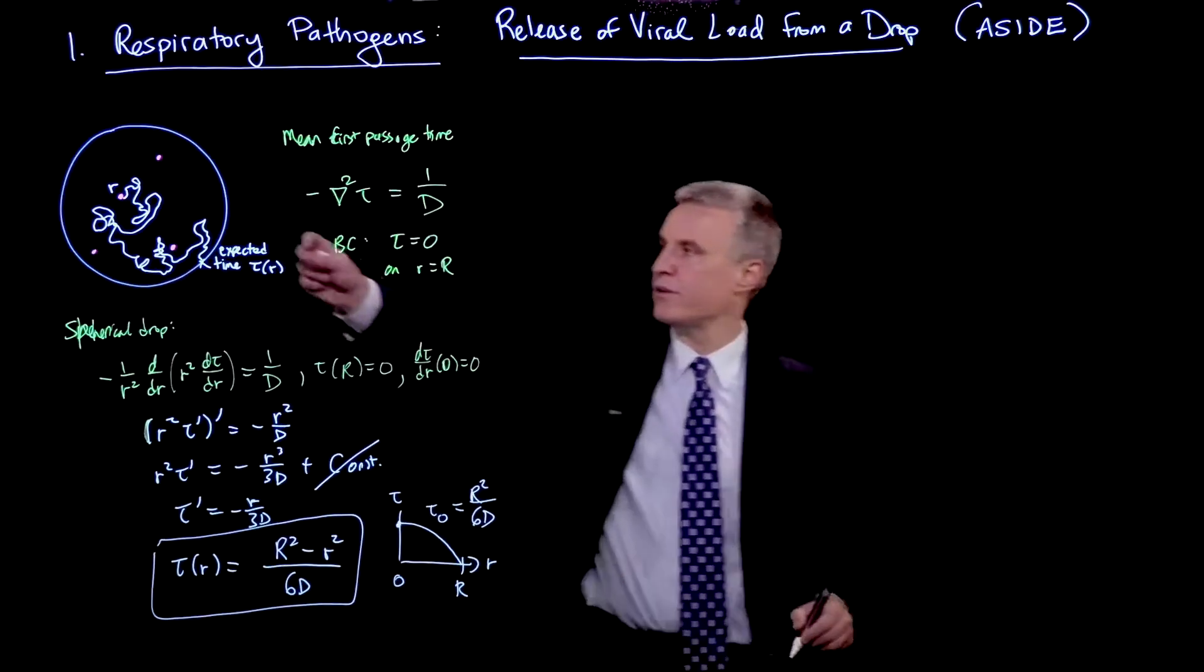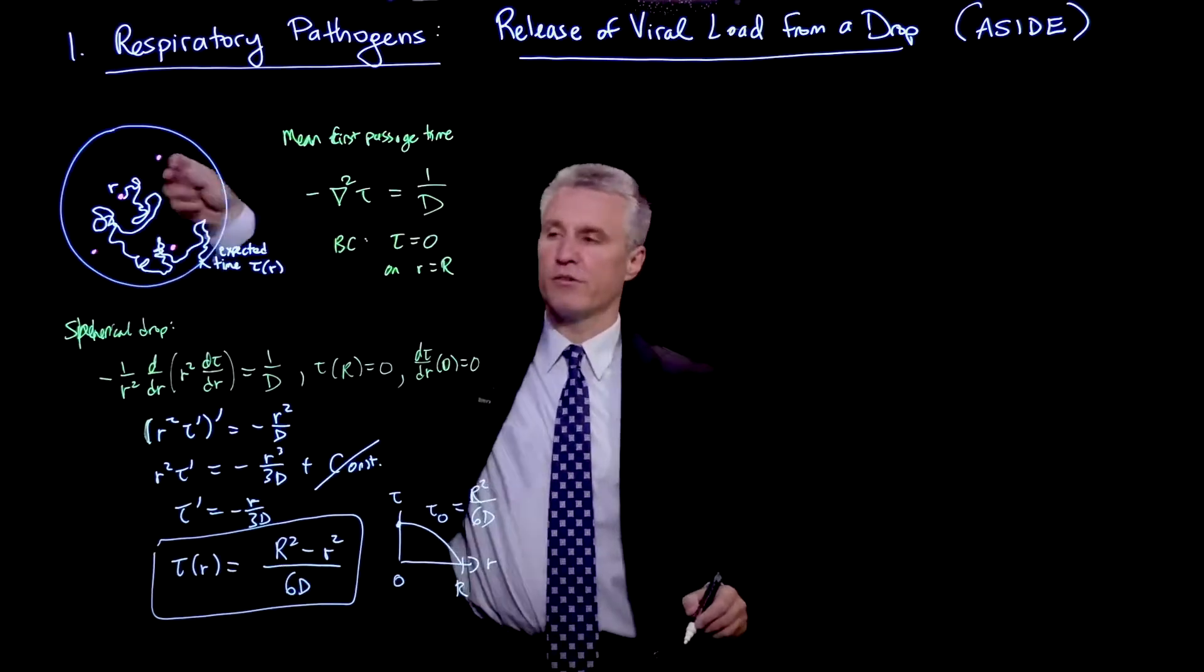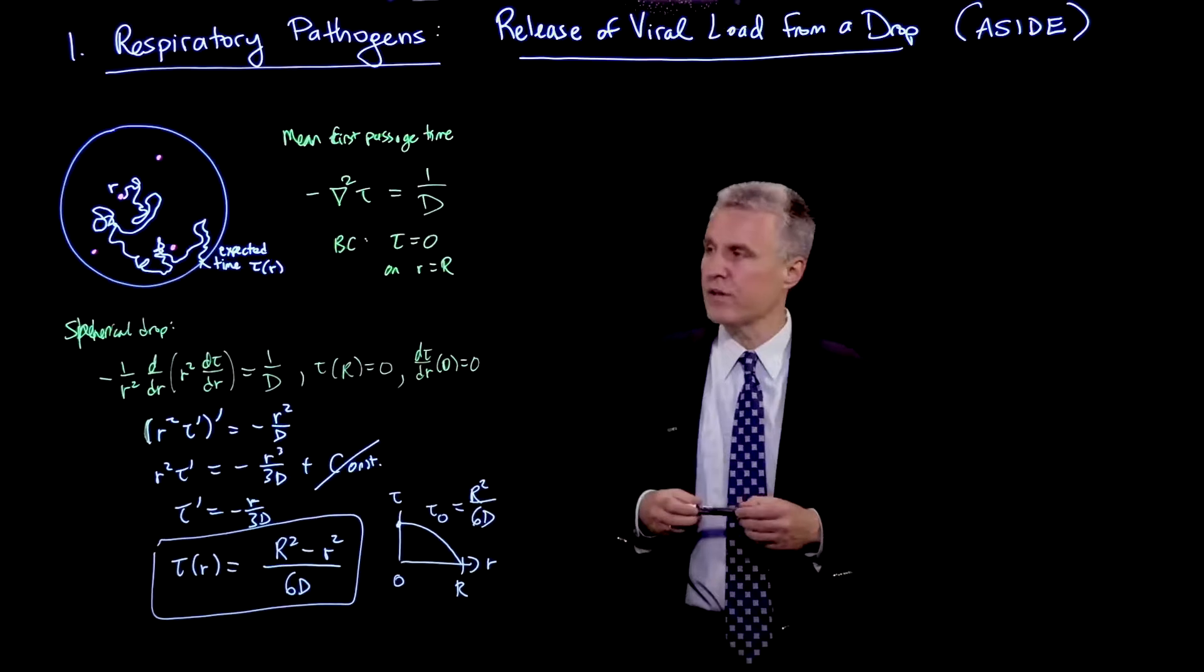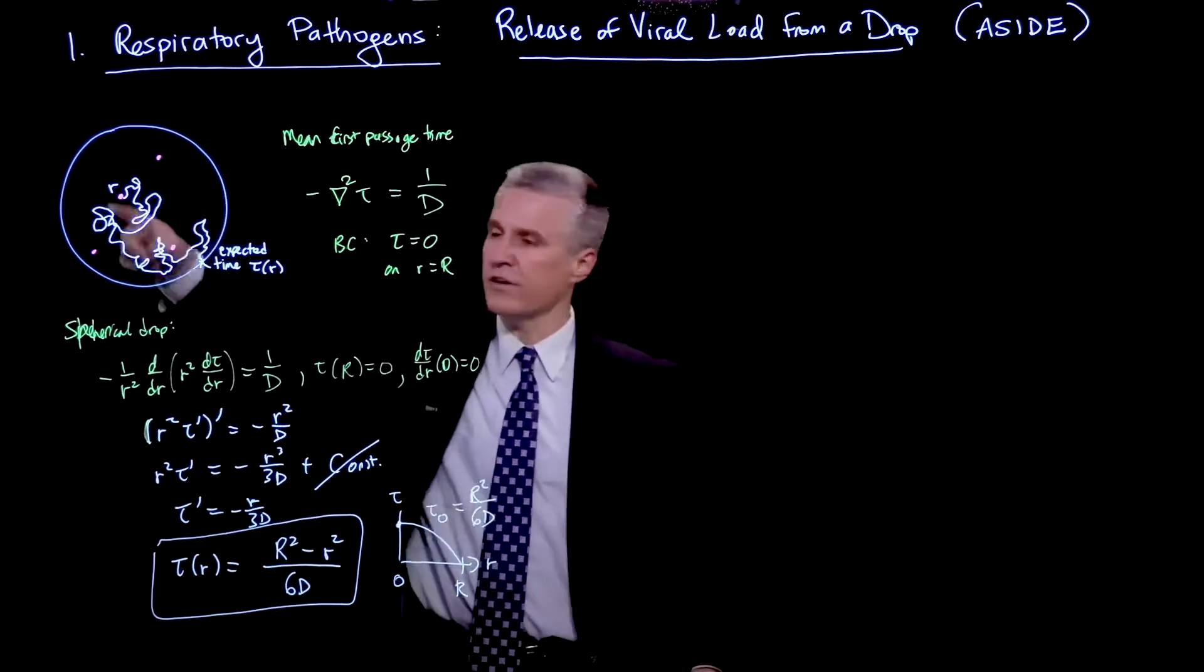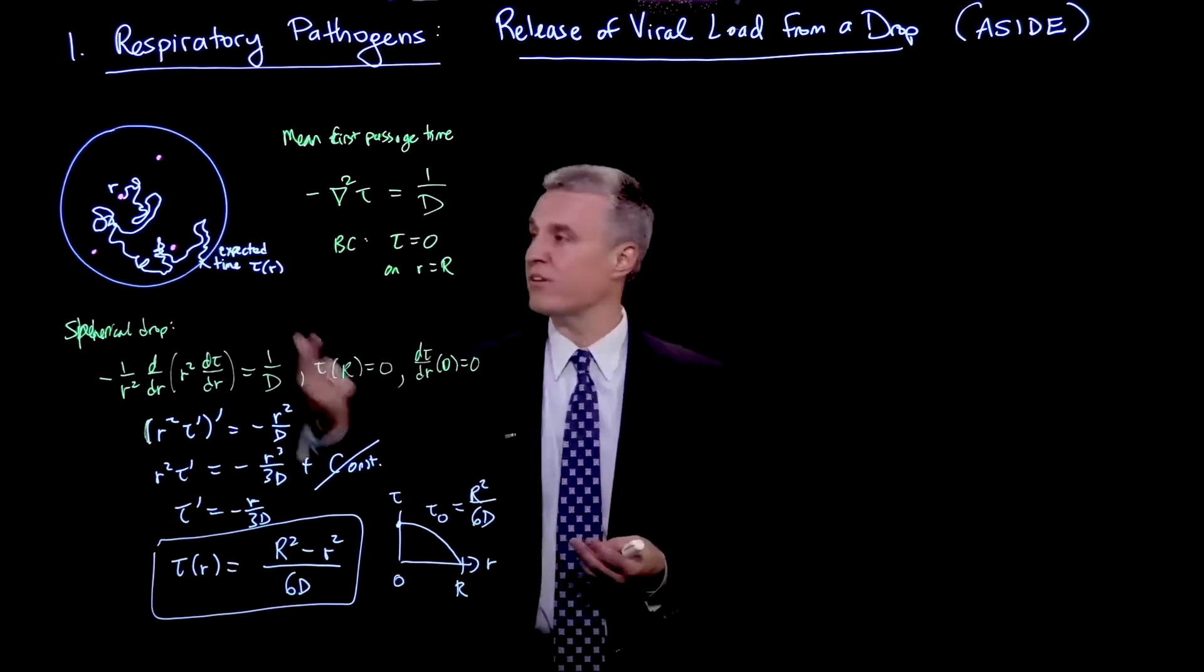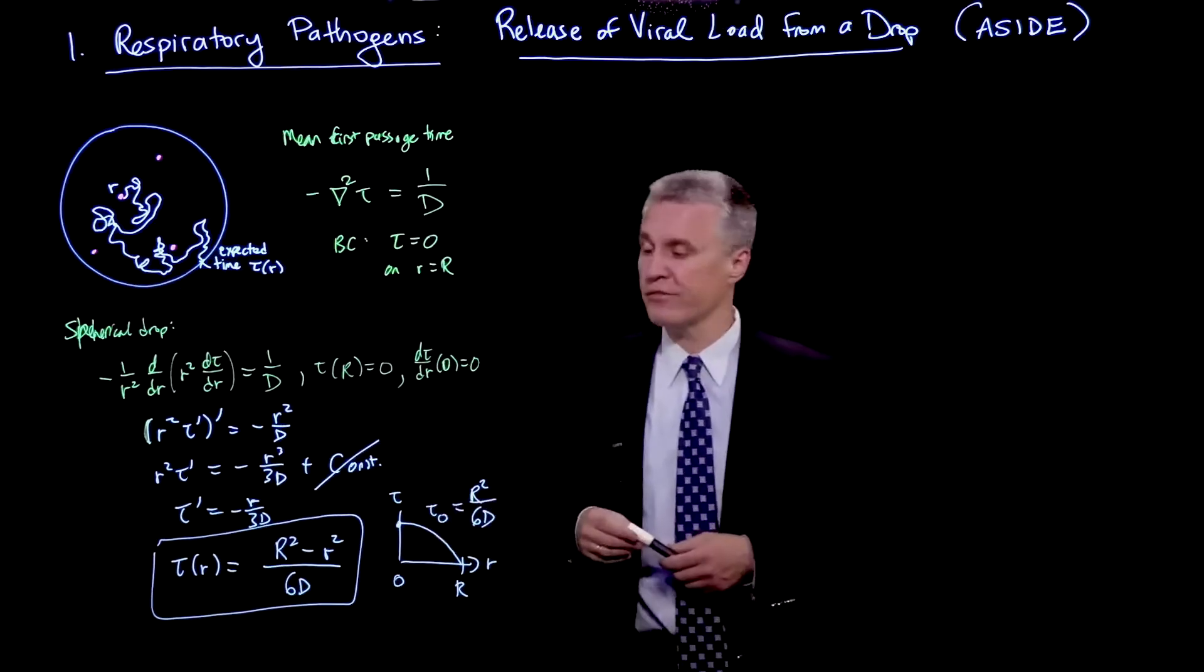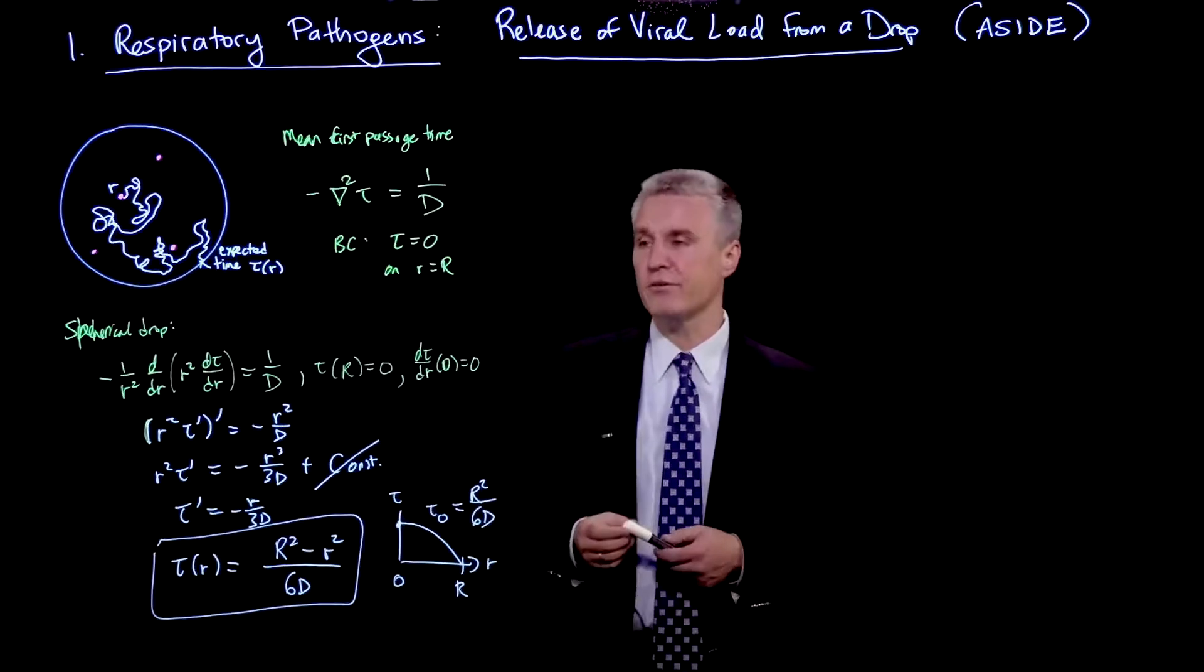And that is r squared over 6d. So that's if you happen to be unlucky and right in the middle, that's the longest you would expect to take from a particular part. Now, on the other hand, as I've sketched here, in a typical droplet, if the virions are randomly distributed, some of them, like this guy over here, happen to be very close to the surface. So you're not going to have to wait this long for them to escape.